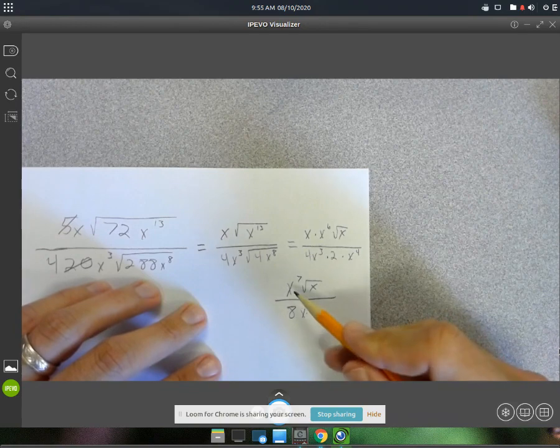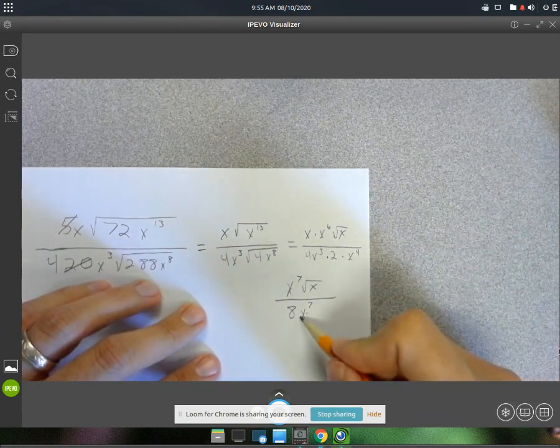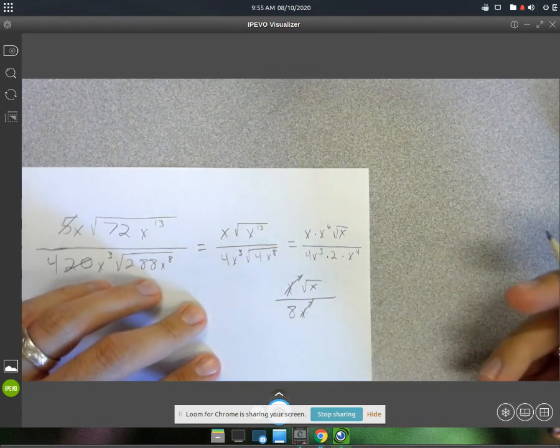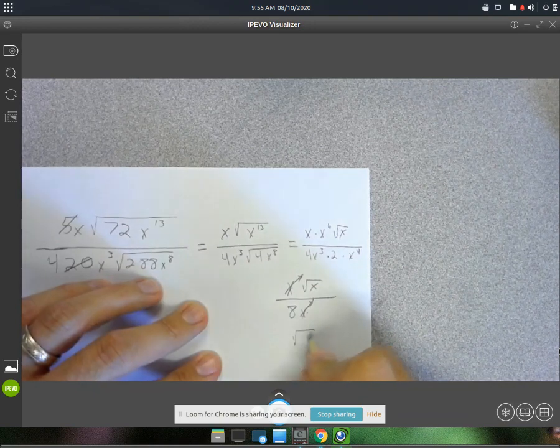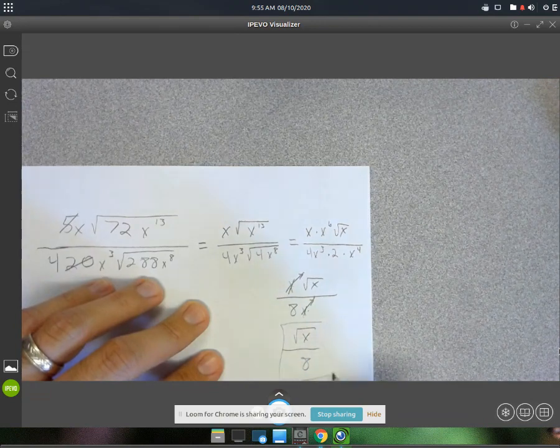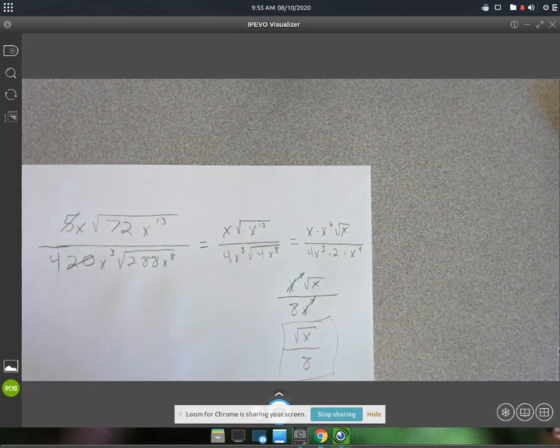So now 7 of these are going to cancel with 7 of those. So you're completely gone with your x's. And then you've got a root x and an 8 in the denominator. And that does it.